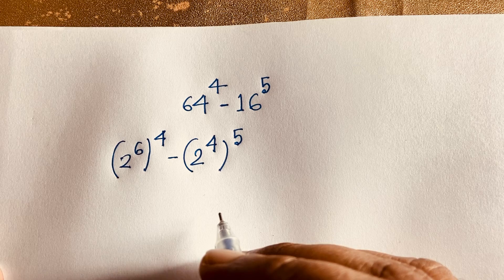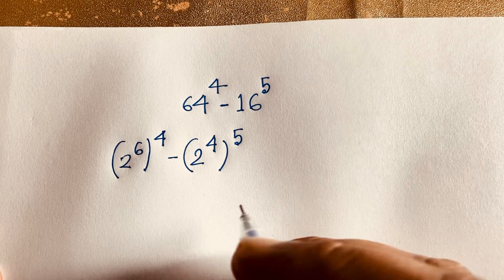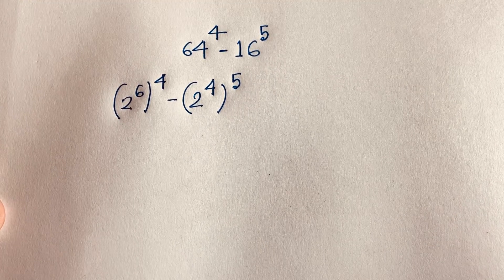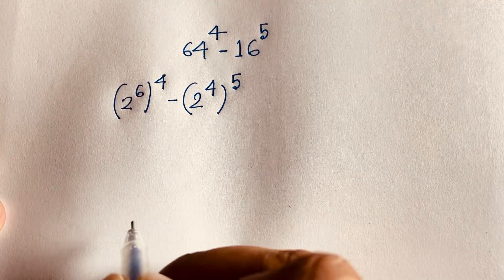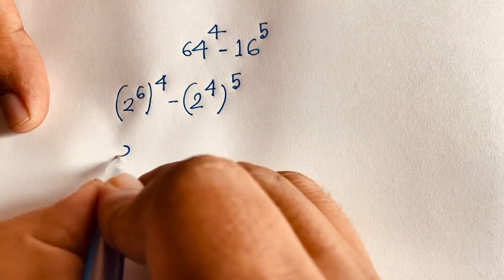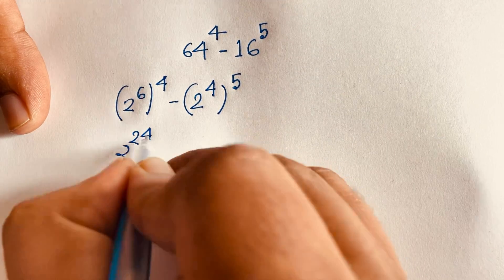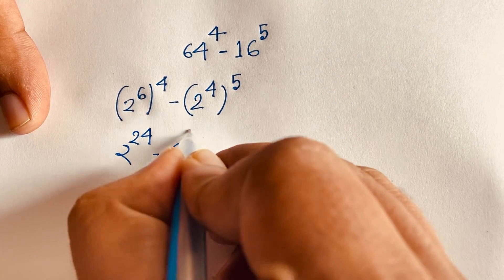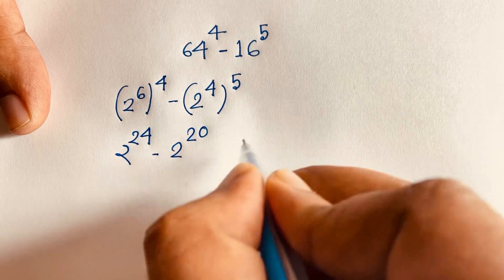So according to the exponential law, we can say this becomes 2 to the power 24 minus 2 to the power 20.